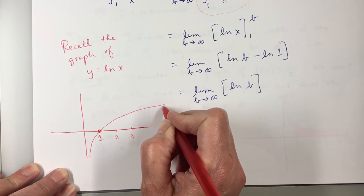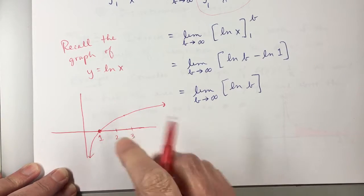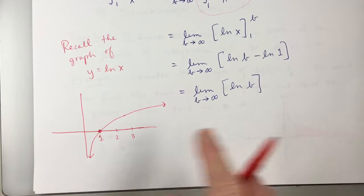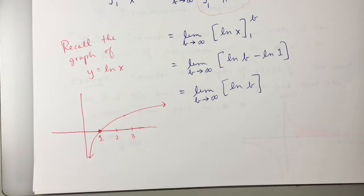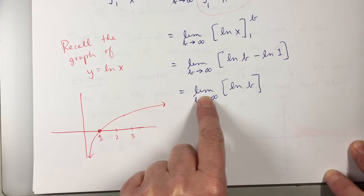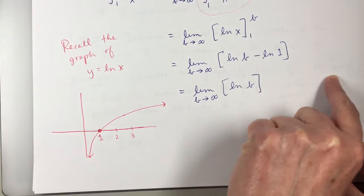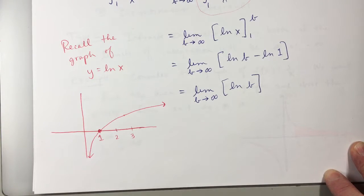Now, it looks like if you go far enough out, it kind of levels off and becomes horizontal, but it does not. It keeps getting higher and higher, although the rate of increase might be slowing down. It keeps getting higher and higher.